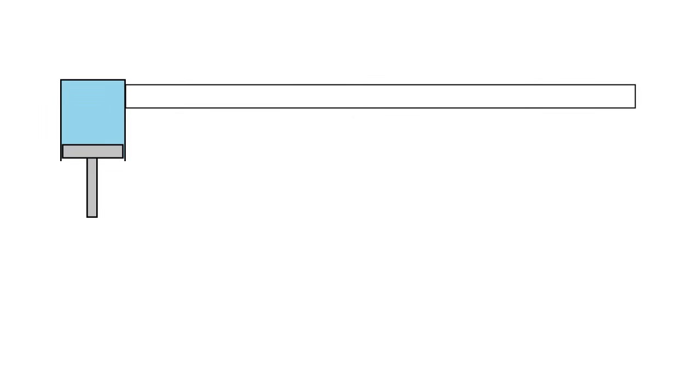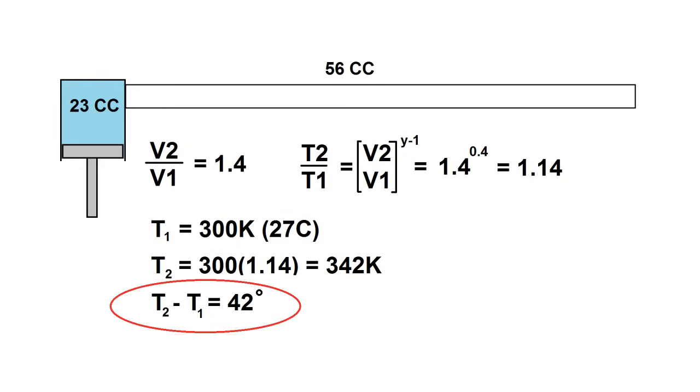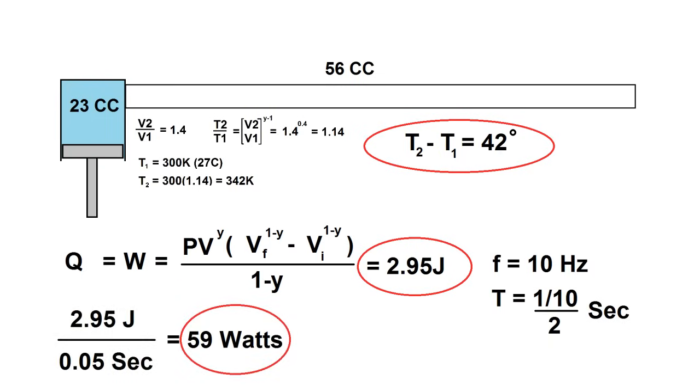Let's crunch some numbers. I've got a dead volume of 56cc and a swept volume of 23cc using the 25mm cylinder, meaning I have a compression ratio of about 1.4. That gives a temperature ratio for adiabatic compression of 1.14. If ambient temperature is 300 Kelvin or 27°C, that means the temperature from compression will be 342 Kelvin or 68°C. That's a measly 42 degrees of difference that I have to get all the heat out across. The heat that needs to be removed in one cycle is the work that was put in, which comes out to 2.95 joules assuming the compression is completely adiabatic. Now suppose I'm running at 10 hertz and I need to get rid of that heat in half a cycle, meaning I have 50 milliseconds to dump 2.95 joules, which averages out to 59 watts of heat dissipation at the hot end.